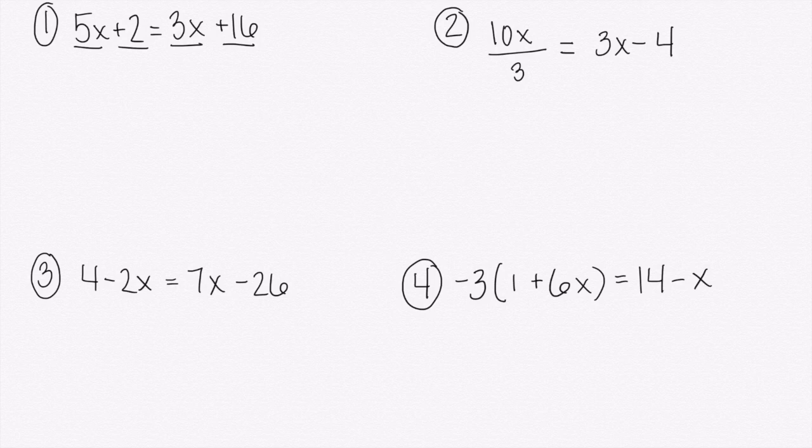I can only combine like terms, which would be 5x and 3x and 2 and 16. So what I'm going to need to do is move things from one side of the equation to the other. If I'm moving something, I'm not multiplying it or dividing by it, I'm subtracting it off.